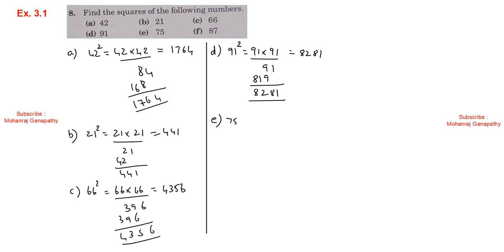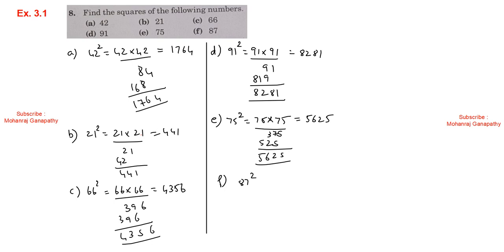Continuing sum 8: E) 75 squared: 75 × 75 = 5625. F) 87 squared: 87 × 87 = 7569.